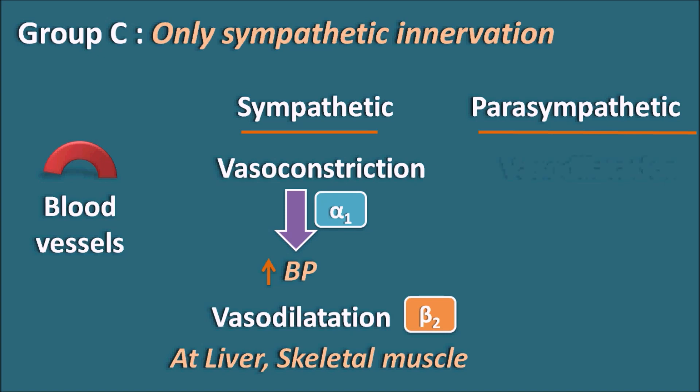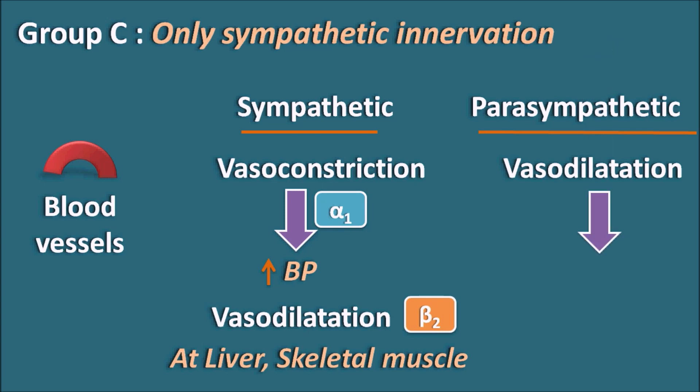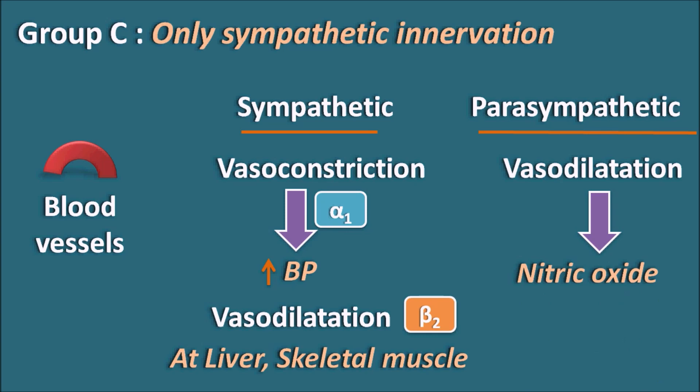At the skeletal muscle and liver, blood supply needs to be increased in order to work under stressful conditions. On the other hand, the parasympathetic system can produce vasodilation, but this is not a direct effect — it is an indirect effect. The parasympathetic system does not have innervation at blood vessels, but still it can produce vasodilation. This vasodilation is mediated by nitric oxide, which is released from the endothelium by the action of the parasympathetic system.